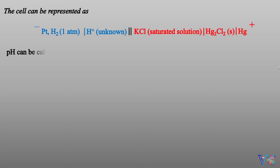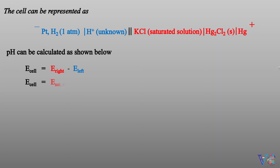The cell can be represented as shown below. E_cell is equal to E_right minus E_left. That is, the EMF of the cell is equal to the electrode potential of the saturated calomel electrode minus the electrode potential of the hydrogen electrode.